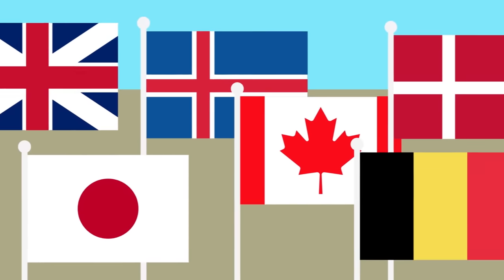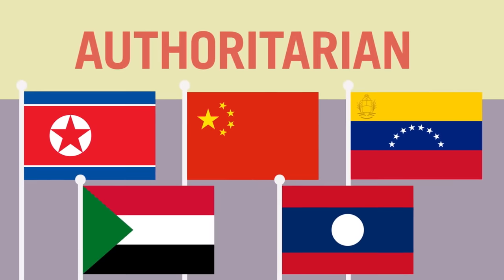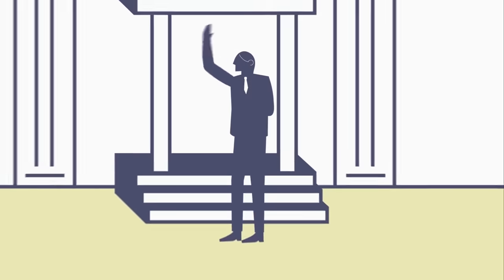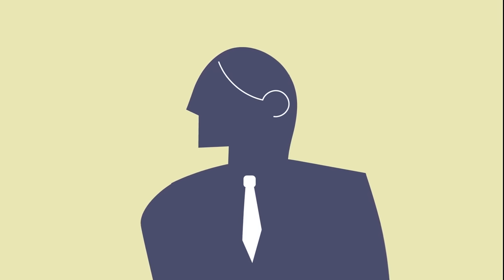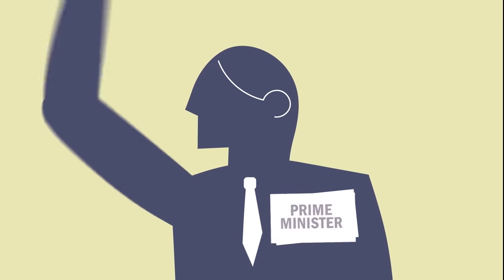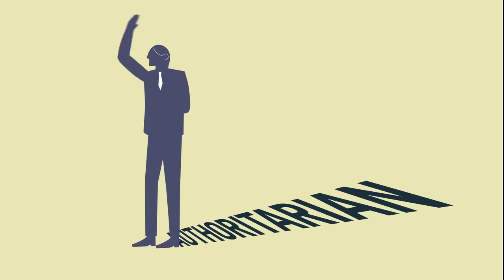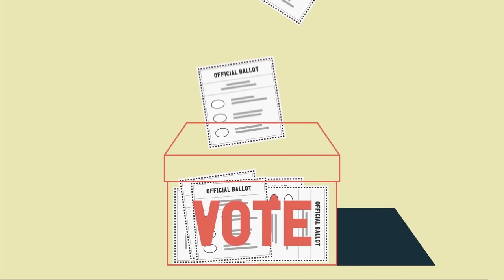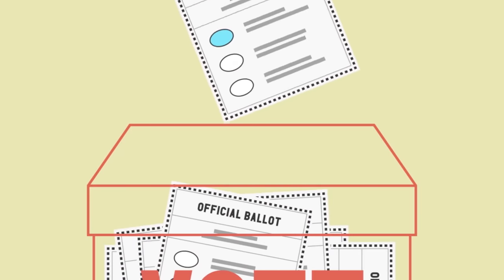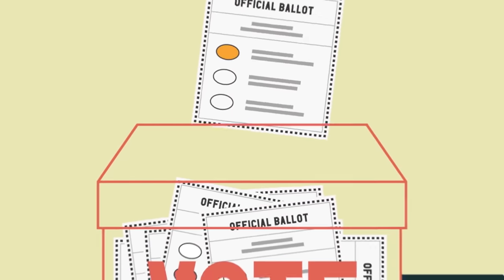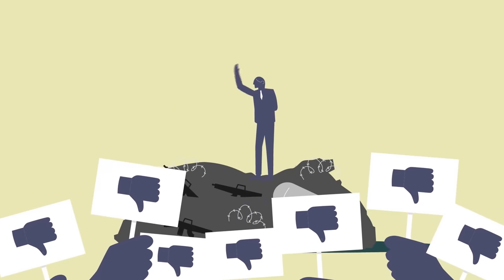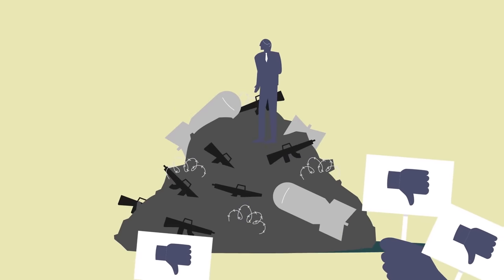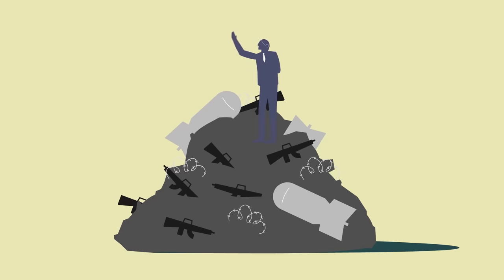In contrast to democracy, many countries have authoritarian governments with just one person or a small group of people in charge, and few checks on their power. Authoritarian leaders might use titles like president and prime minister, but that doesn't mean they are democratic. If they hold elections, they probably aren't free, fair, or competitive, leaving ordinary people out of the political process. Authoritarian governments tend to ignore rules limiting their power, if there are any. And they often use violence and intimidation to restrict what people and the press say, so that leaders can impose the policies they want.